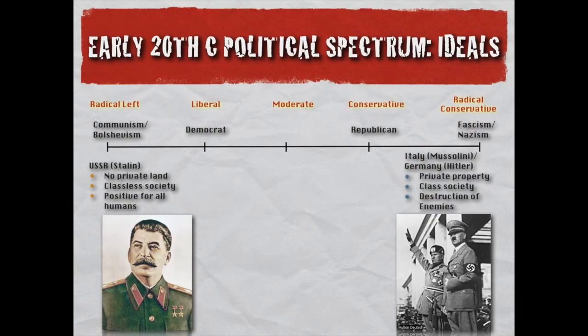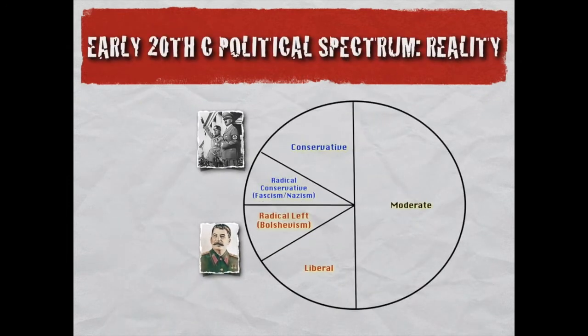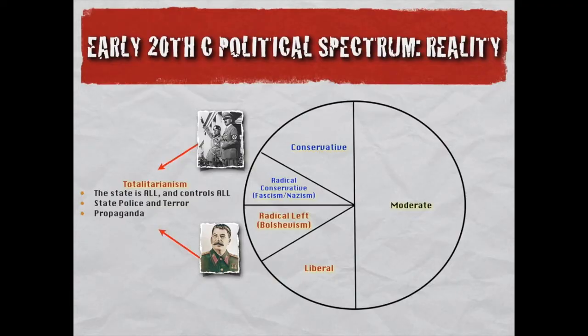But if you look at the actual methods of these men — Stalin on the left, Hitler and Mussolini on the right — they're all so similar. They claim to be totally different, but in reality they're quite the same: both advocate total control — totalitarianism. The definition: the state is all, the state controls all. There are secret state police and terror used constantly. Propaganda is ever-present, convincing individuals that the state reigns supreme and all rights must be given over to the supreme leader.